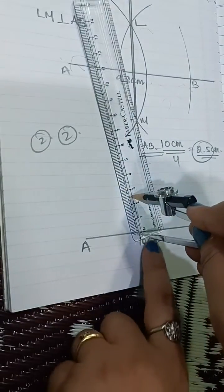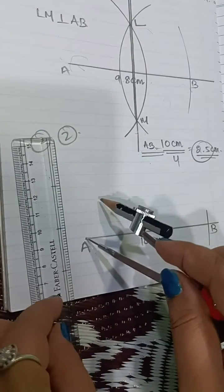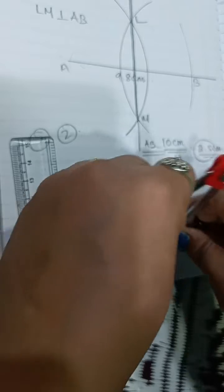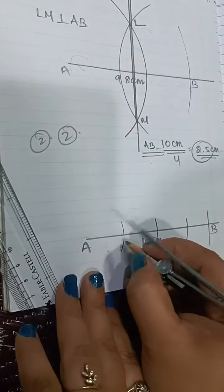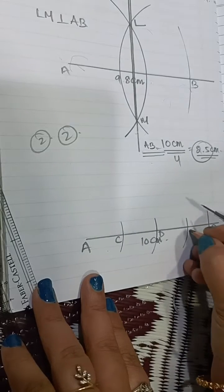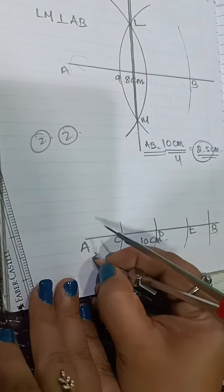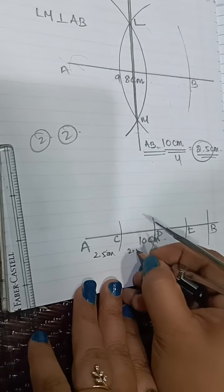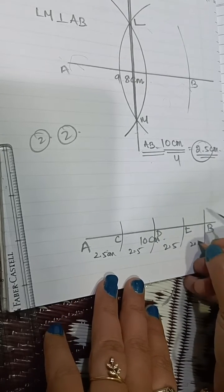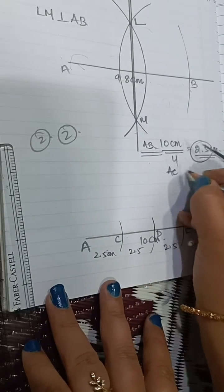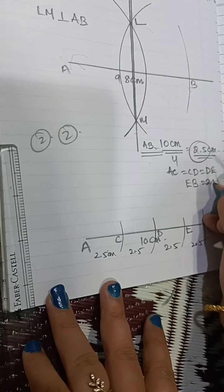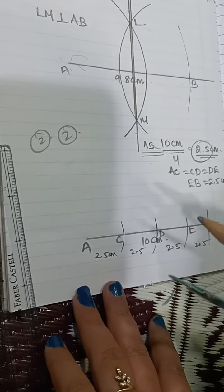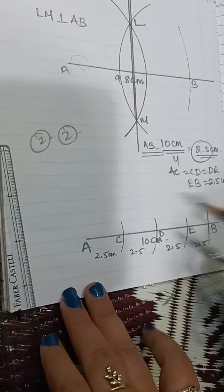Take the measure of 2.5 cm and draw arcs. This is 2.5 cm, and this is 2.5 cm — mark 1, 2, 3, 4. Suppose these points are C, D, and E. Then AC = 2.5 cm, CD = 2.5 cm, DE = 2.5 cm, and EB = 2.5 cm. All parts are 2.5 cm. The length of each part is 2.5 cm.